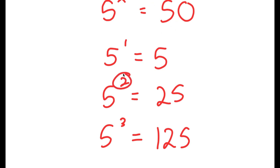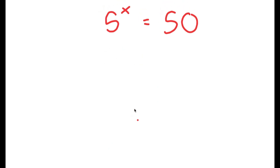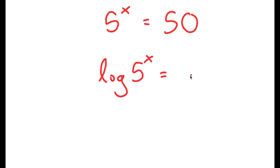So we know that the value of x is going to be somewhere in between 2 and 3, meaning it's going to be a decimal. So how are we going to find the exact value of x? Well, we're going to be using logarithms. So I'm going to take the log on both sides, so I get log of 5 to the power of x is equal to log 50.